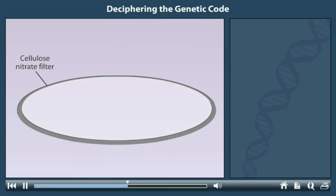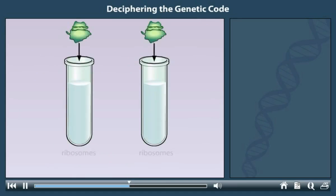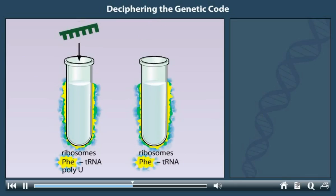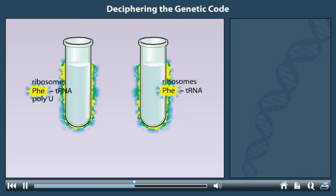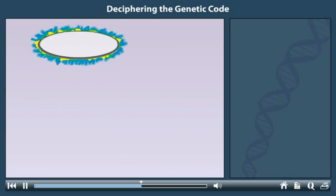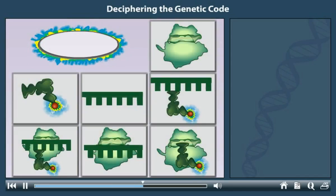For their experiments, the investigators created mixtures that included ribosomes and tRNA molecules charged with radioactive phenylalanine. One of the mixtures also received poly-U RNA. After giving these mixtures time to incubate, the mixtures were poured on the filters and then washed. After the washing step, the scientists found that only one of the filters was radioactive. Based on your knowledge of the sticking properties of the ribosomes, poly-U RNA, and phenylalanine tRNA to the filters, what combination of molecules has adhered to the radioactive filter? Click on the correct molecule combination.